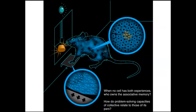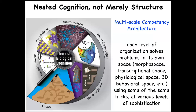Consider the notion of cognitive glue. When a rat learns to press a lever for a reward, the cells at the bottom of the foot experience the lever; the cells in the gut experience the sugar. Who owns the associative memory connecting these? No individual cell had both experiences. There has to be a rat that is the owner of information none of its parts have.